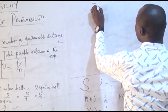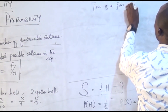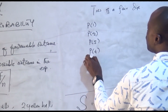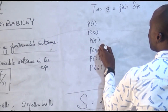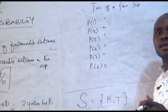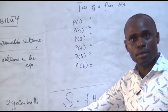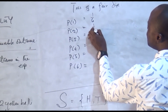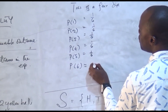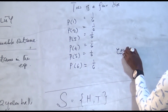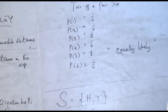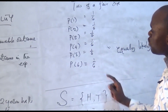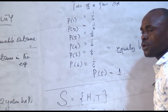In the toss of a fair die, the probability of having a one, two, three, four, five, or six are all equal — each is one over six. Whenever you toss a fair die, the chances of having any side are equal. We use the term 'equally likely' in probability to mean that the chances of having any of these numbers are all equal. By the time you add all of these together, the probability of the sample space equals one.